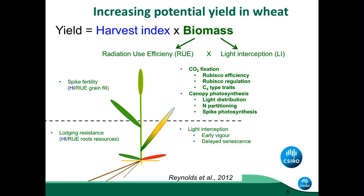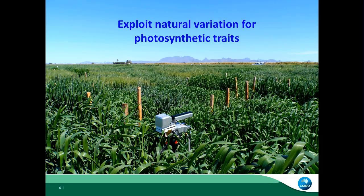So one way to calculate yield is with harvest index and biomass. And biomass is related with radiation use efficiency and light interception. But in the plants — in this case wheat — everything is important: the spikes, spike fertility is very important; the roots, for lodging, for water, they are important; light interception; early vigor — getting out quick in the field and starting growing quickly is very important. Another factor that is very important is photosynthesis. I'm working in this area, in the CO2 fixation, because it's what biomass is getting in the crop to get into the grain.